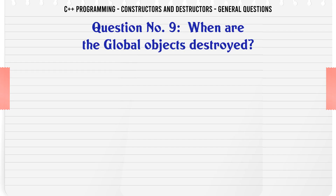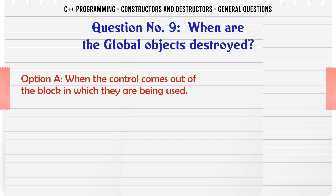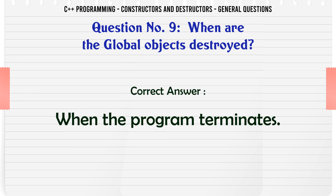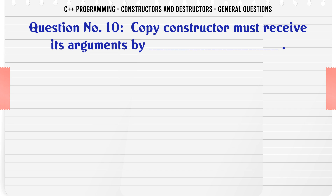When are the global objects destroyed? A. When the control comes out of the block in which they are being used. B. When the program terminates. C. When the control comes out of the function in which they are being used. D. As soon as local objects die. The correct answer is When the program terminates.